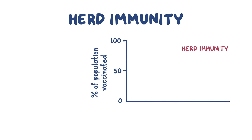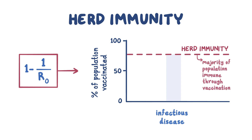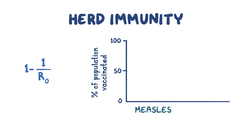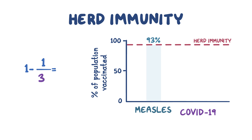The potential increased transmissibility of the new strains may affect the ability of regions to reach herd immunity. Herd immunity is usually calculated by reaching a threshold defined by the equation 1 minus 1 over R0. For most infectious diseases, herd immunity is usually achieved when a majority of the population is immune through vaccination. For example, measles has an R0 value of about 15, so 1 minus 1 over 15 equals 0.93, meaning 93 percent of the population must be vaccinated to achieve herd immunity from measles. For COVID-19, the WHO estimates the R0 value is between 2 and 4, so if we choose a middle value of 3, then 1 minus 1 over 3 equals 0.66, meaning 66 percent of the population must be vaccinated to achieve herd immunity from COVID-19.